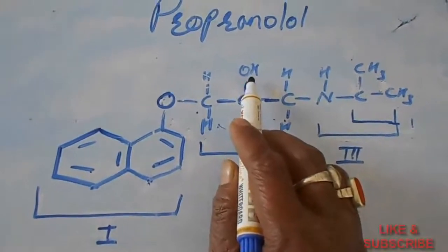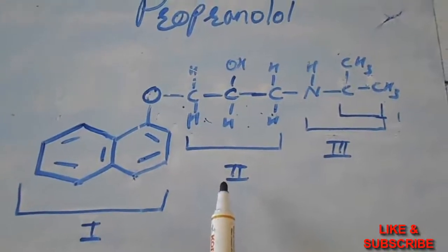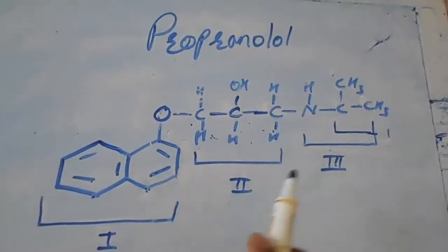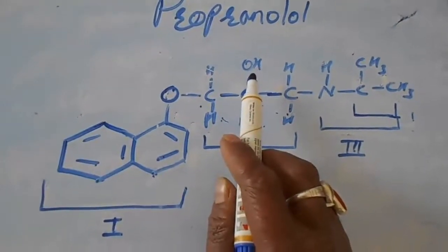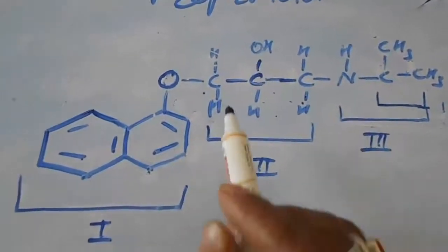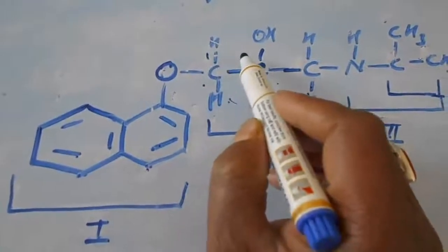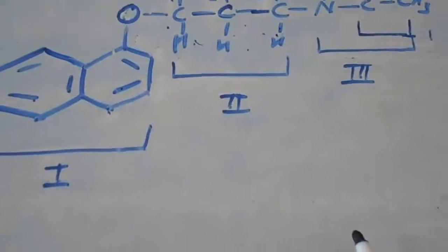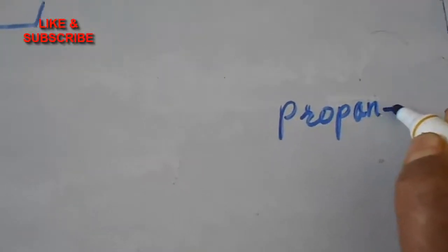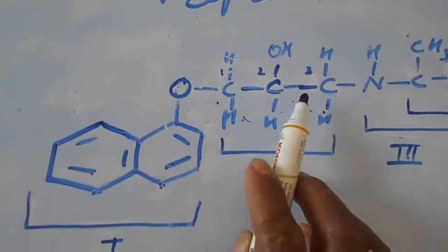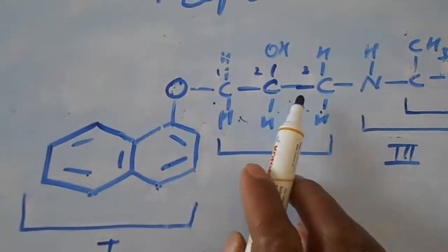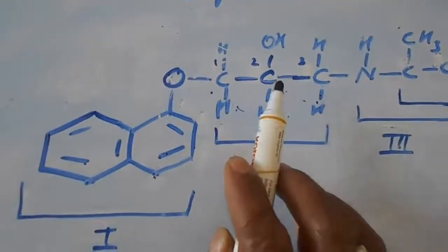The second segment — a propane alkyl chain — has one hydroxy group at the second position. This becomes the principal functional group present in this molecule. That is why we will take the hydroxy group, that is the alcohol functional group, as the parent functional group. Numbering this chain: first carbon, second carbon, third carbon. We write 'propan' and since the second position has a hydroxy group, we write 'propan-2-ol'. This is the name of the parent chain.